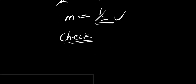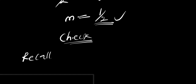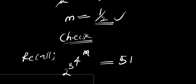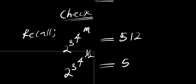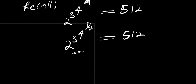Recall we had 2 to the power of 3 to the power of 4 to the power of m, equals 512. Our m is 1 over 2, so let's substitute in here. We are going to have 2 to the power of 3 to the power of 4 to the power of 1 over 2, and this equals 512. So if this actually gives us 512, that means 1 over 2 is the correct answer.